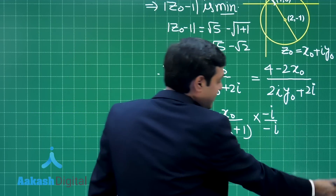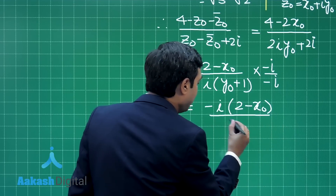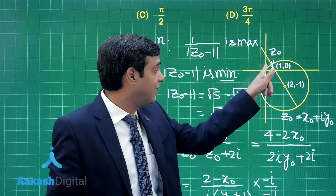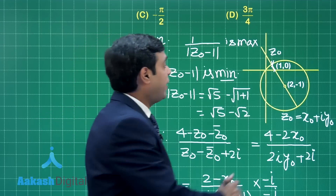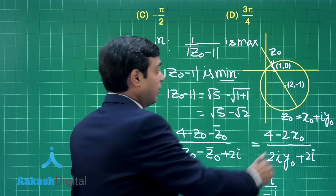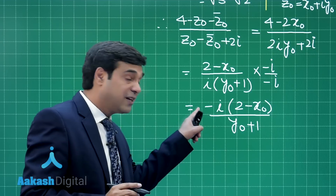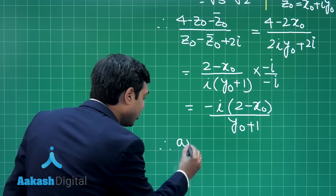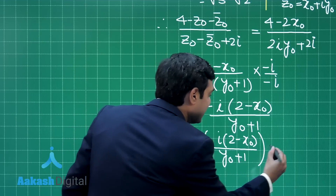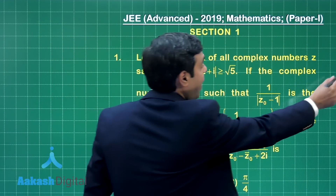This simplifies to -i × (2 - X₀) / (Y₀ + 1). From the figure, Z₀ lies in the first coordinate region, so X₀ < 2, meaning (2 - X₀) is positive. Therefore, (2 - X₀)/(Y₀ + 1) is clearly positive. Multiplied by -i, the argument of -i × (positive real number) is clearly -π/2. So the correct answer is -π/2.